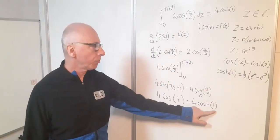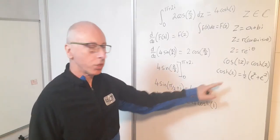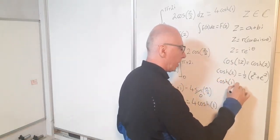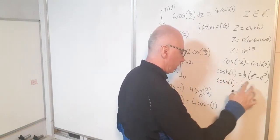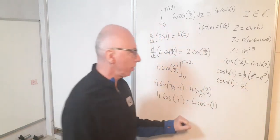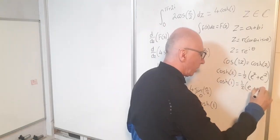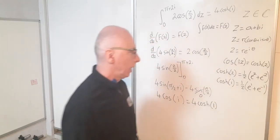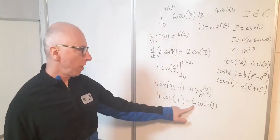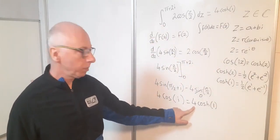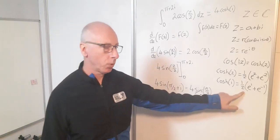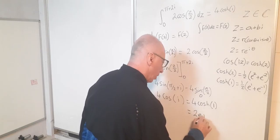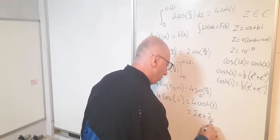So here I've got 4 cosh of 1. So I could write cosh of 1, let's do that first. cosh of 1 equals one half, so where I see a z I just put 1. So I've got e plus e to the minus 1. Now I've got 4 of those. So therefore my result of this integration would be 4 times that. So that could equal 2e plus 2 over e.